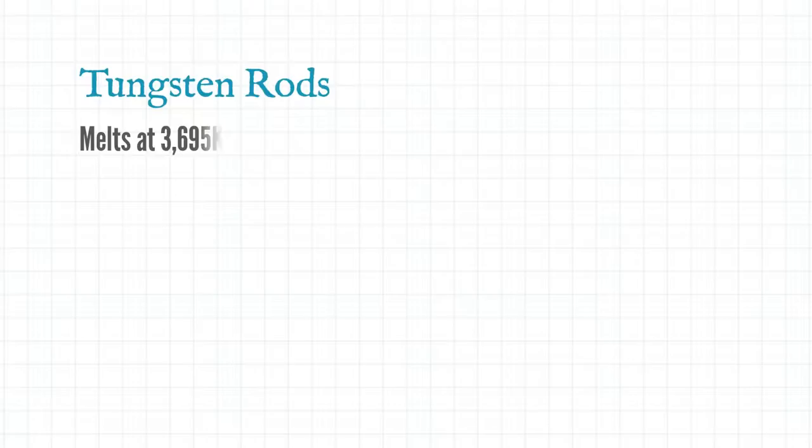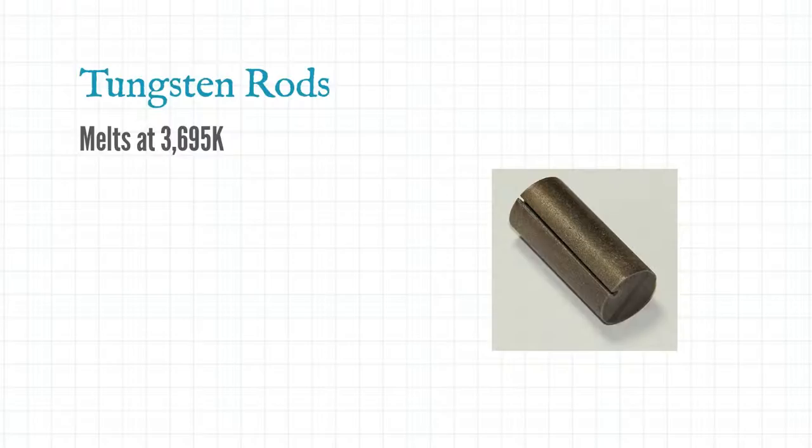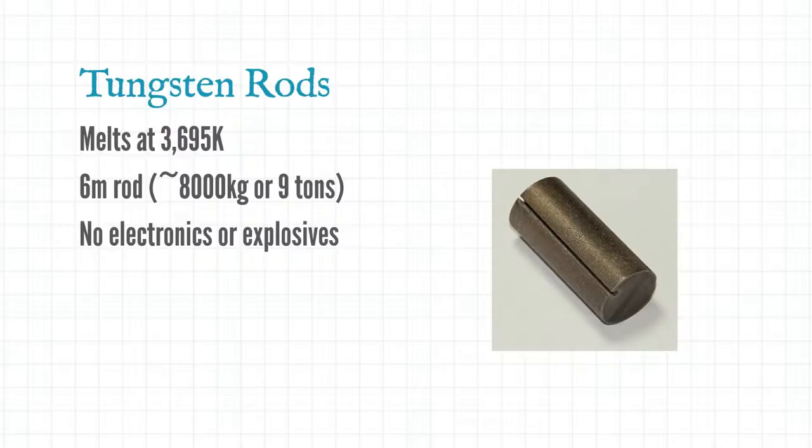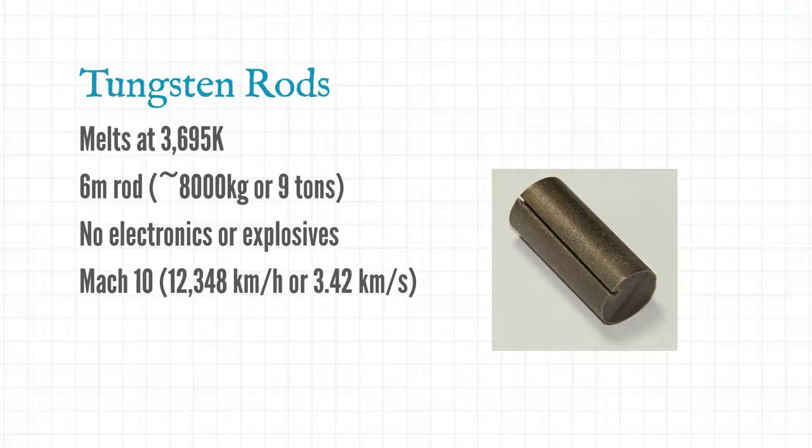The most commonly mentioned type of this weapon would be tungsten rods. Tungsten is extremely strong and has the highest melting point of all the elements at 3,600 kelvin. It could be formed into 6 meter long rods roughly the size of a telegraph pole. These would weigh about 9 tons each or 8,000 kilos. It would be shaped to minimise air resistance and maximise terminal velocity. There's no electronics or explosives involved which makes the device very simple and it could travel around Mach 10 which is 3.4 km per second. This would put out the equivalent power of 11.5 tons of TNT.